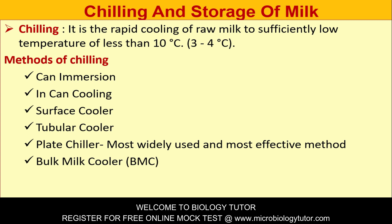Chilling is a rapid cooling of raw milk to a sufficiently low temperature — less than 10°C, usually 3 to 4°C. Methods of chilling: can immersion, can cooling, surface cooler, tubular cooler, plate chiller. The most widely used and most effective method is the spaced plate chiller; also the bulk milk cooler (BMC).